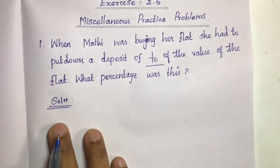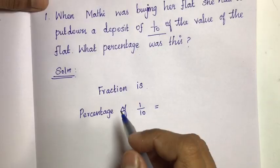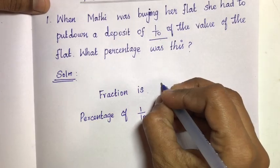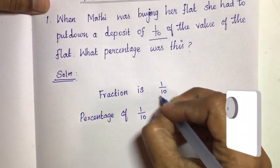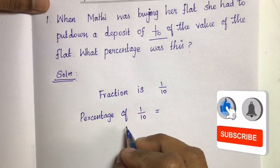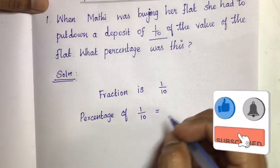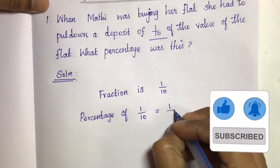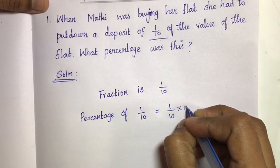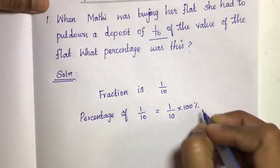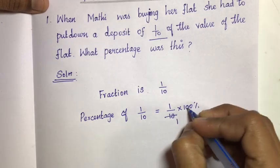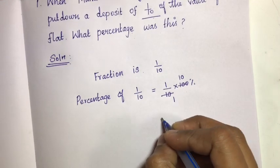Solution: What is the fraction here? The fraction is 1/10. To convert a fraction to percentage, multiply by 100. So percentage of 1/10 is equal to 1/10 multiplied by 100. 10 into 10 is 100, so 1 ten is 10.